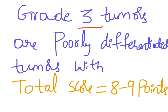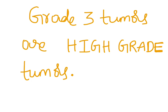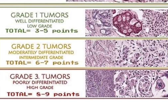Grade 3 tumors are poorly differentiated tumors with a total score of 8 to 9 points. These are high-grade tumors. In summary: Grade 1 (low grade) = 3 to 5 points; Grade 2 (moderately differentiated) = 6 to 7 points; Grade 3 (poorly differentiated, high grade) = 8 to 9 points.